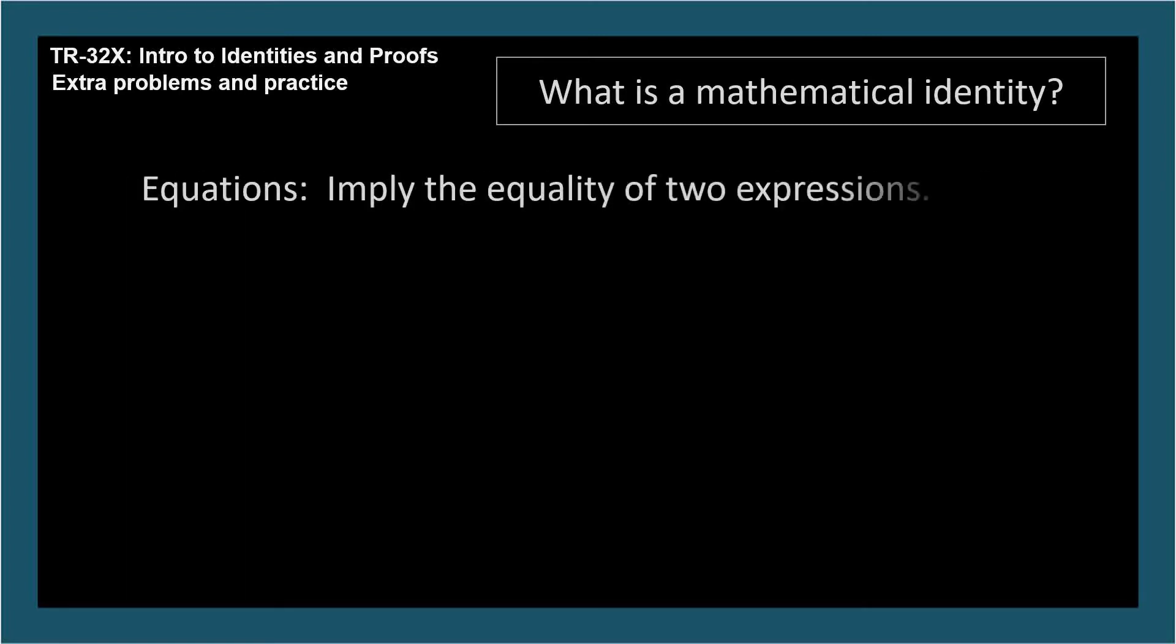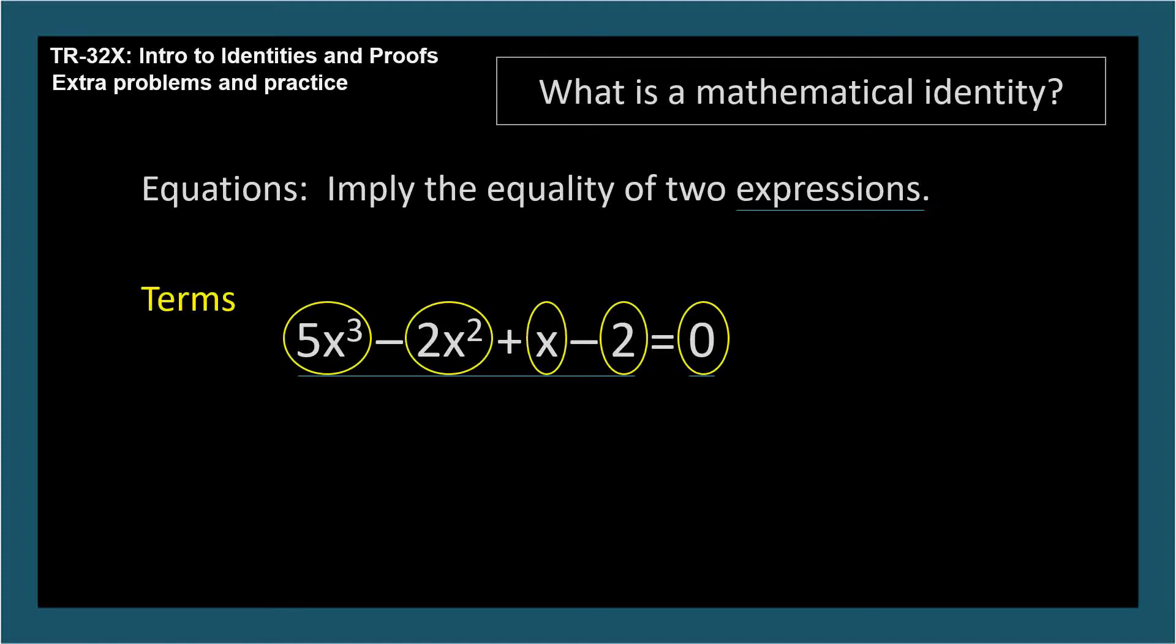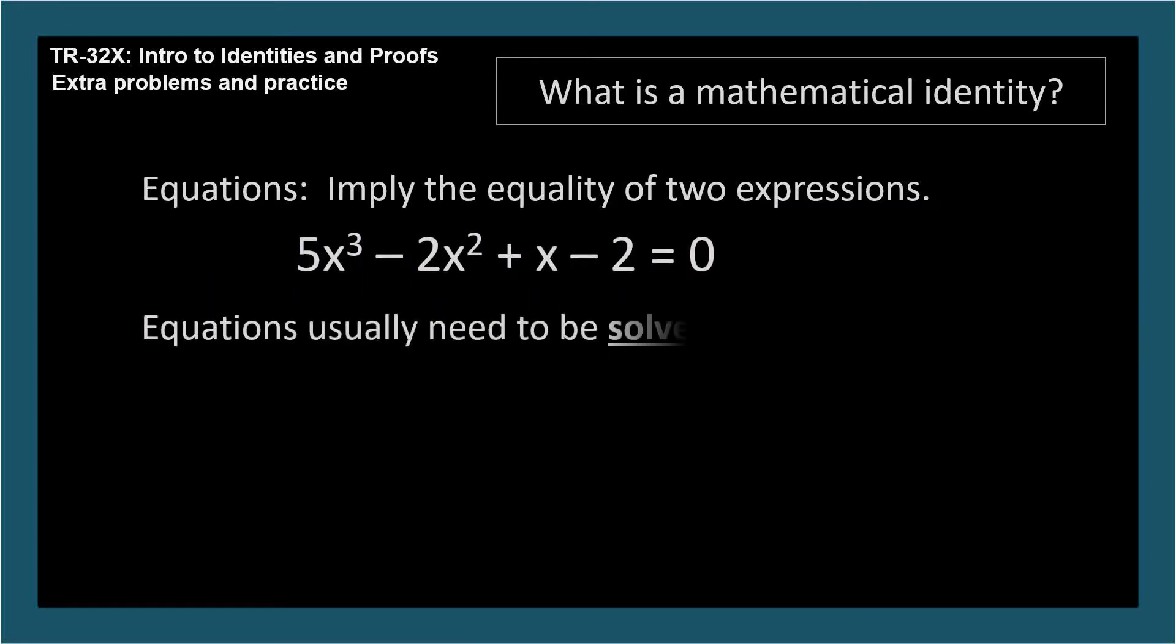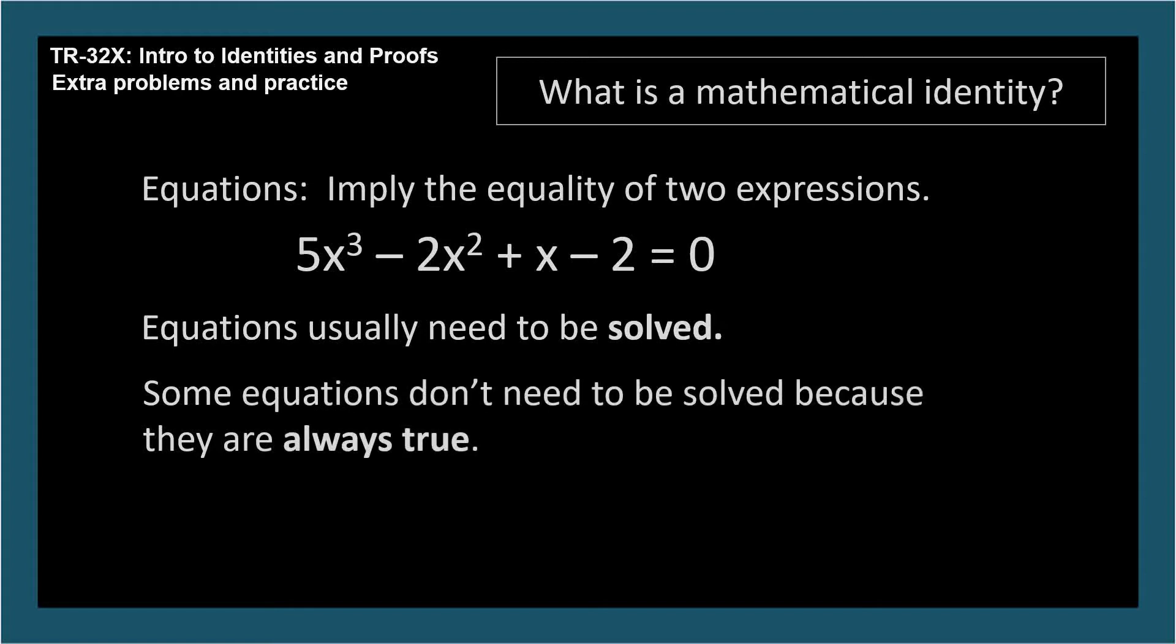Equations imply the equality of two expressions. It's easy to identify the two expressions of an equation because they're on opposite sides of the equal sign. While we're here, expressions are comprised of terms that are separated by a plus or minus sign. Equations usually need to be solved. This means answering the question, what variable values make the equation true? Some equations don't need to be solved because they're always true. These special equations are called identities.